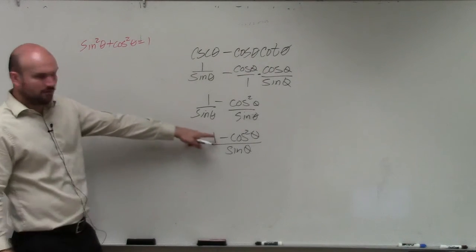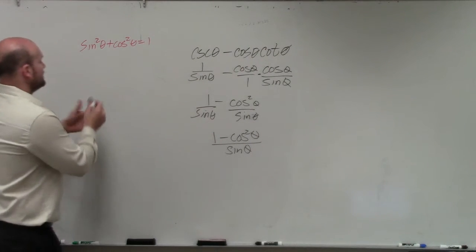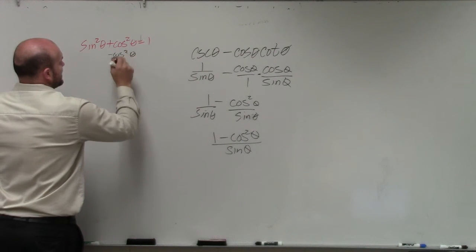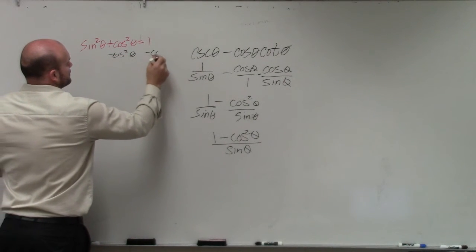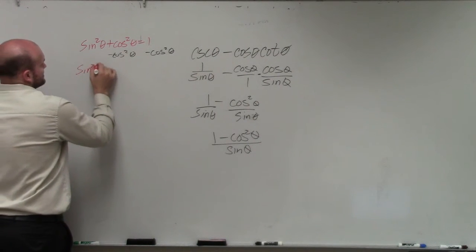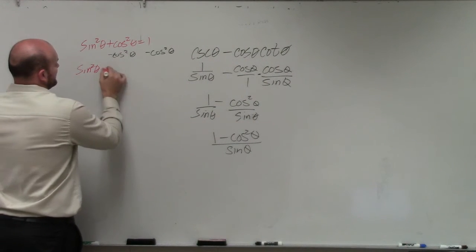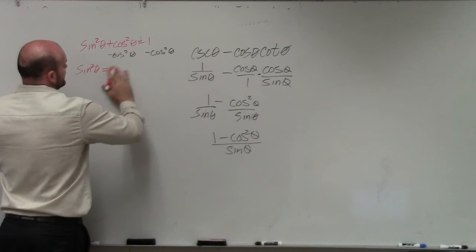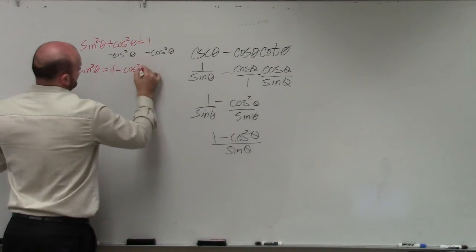Well, that's not 1 minus cosine squared. But what if you subtracted cosine squared of theta on both sides? Then you would have sine squared of theta equals 1 minus cosine squared of theta.